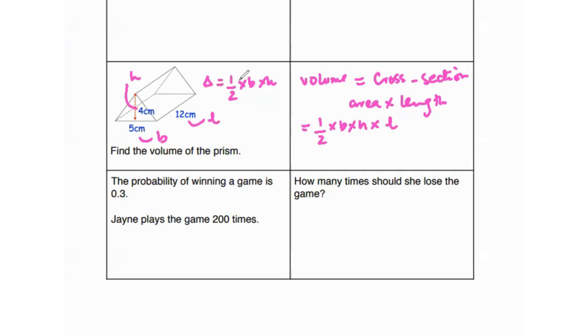Cross section area is one over two times base times height, and then length. That's going to be one over two times five times four times 12. And that is going to give us 120 centimeter cube.